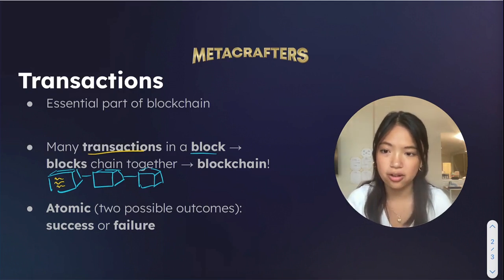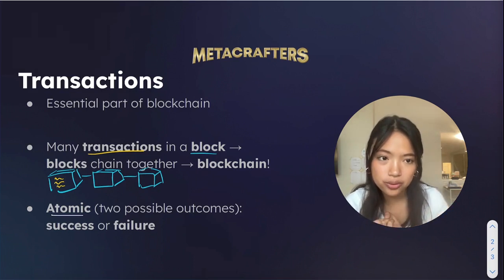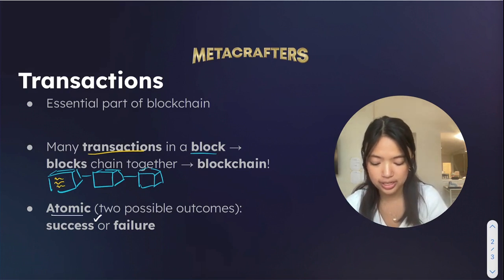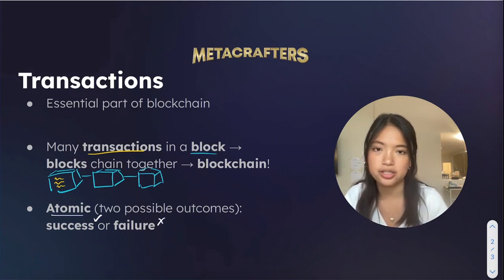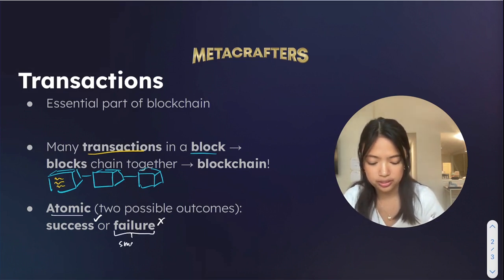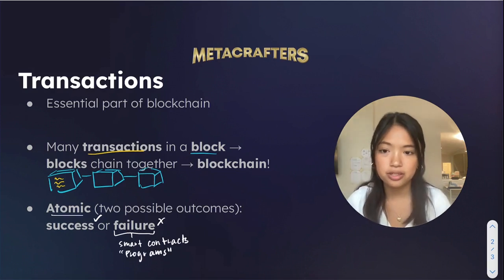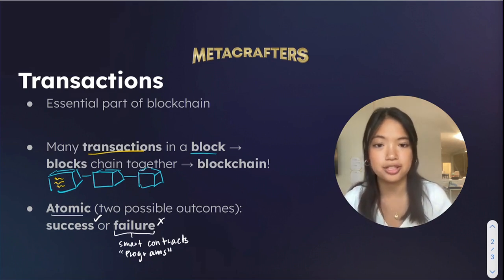Another thing about transactions is that they are atomic, meaning there are only two possible outcomes. One, the transaction happens completely all at once, or two, it doesn't happen at all. In other words, these are known as success or failure. We have to be cautious about failure cases, especially when we're making smart contracts, which in Solana are called programs. This is because we have to learn how to deal with possible failure outcomes when it comes to transactions.